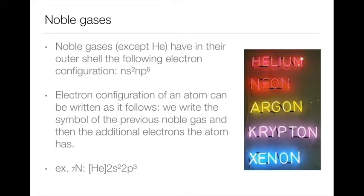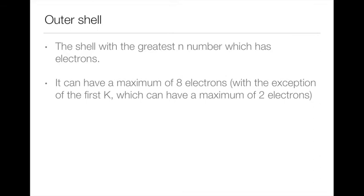Helium has the electron configuration 1s². If I had an element after helium, I would write 1s² and then 2s¹ for the next element. Instead of that, I can put helium in parentheses and then write the additional electrons — for instance, with 2s² 2p³, that is five more electrons than helium. The outer shell is always the shell with the greatest n number, with a maximum of eight electrons, except for the first shell (K shell) which holds a maximum of two.